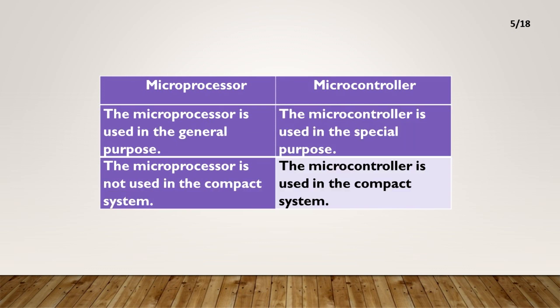The microprocessor is used for general purpose. The microcontroller is used for special purpose. The microprocessor is not used in a compact system. The microcontroller is used in a compact system.